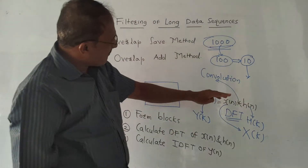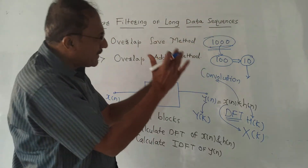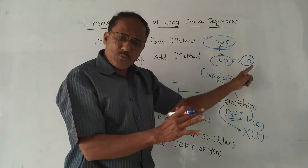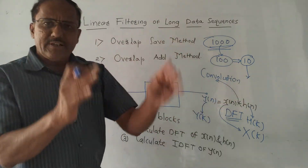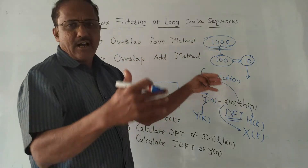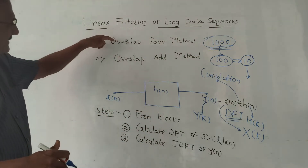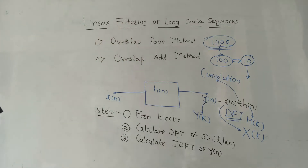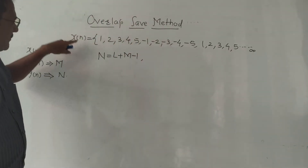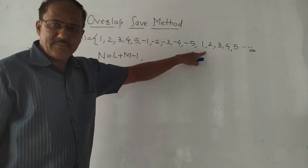Instead of filtering 1000 samples at a stretch, we form different blocks, perform filtering of each block, and then add all the blocks together to generate the output sequence. Now the first method is the overlap save method. As an example, consider the sequence X(n) whose values are 1, 2, 3, 4, 5, then -1, -2, -3, -4, -5, and so on till infinity.